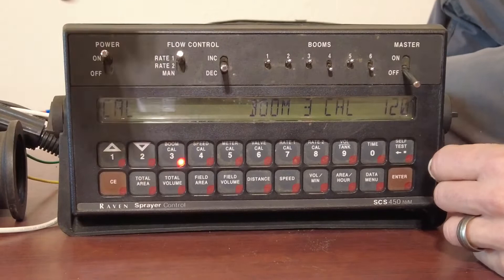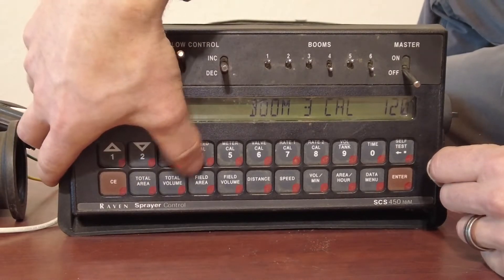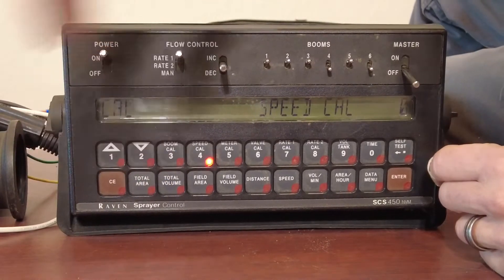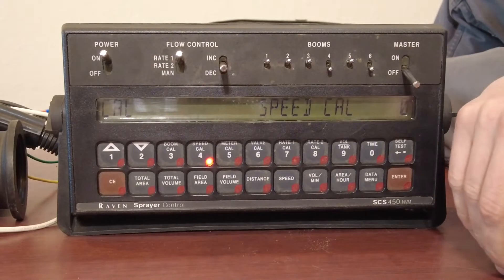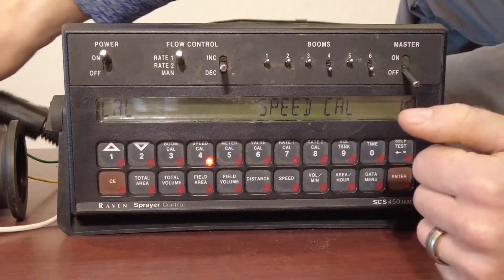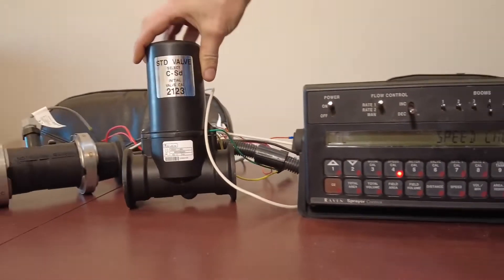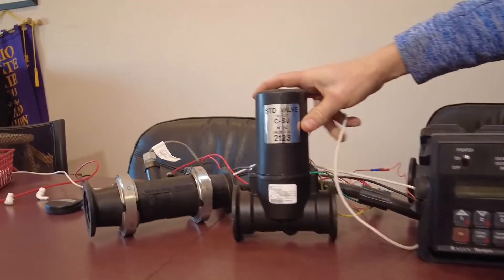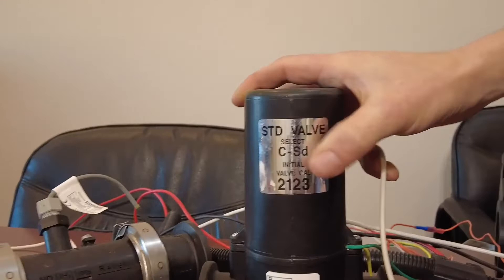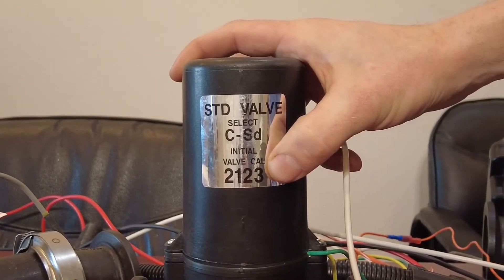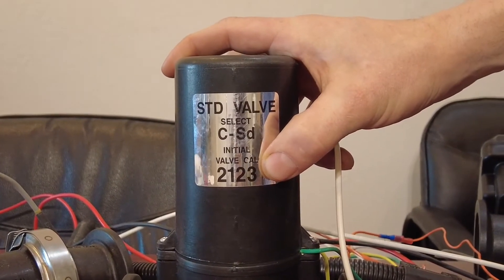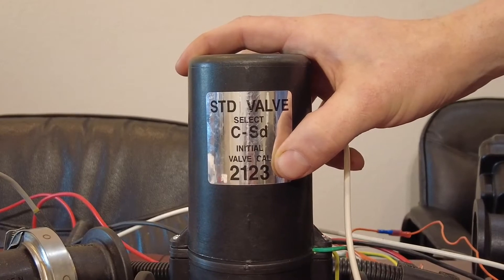So our boom cals are now set up. It's a three section, 120 inches per one. Now we go to our valve cal. And you're going to have to zoom out for this, Cody. But the valve cal is found on the valve itself. Right here is our standard valve. Valve cal, 2123.